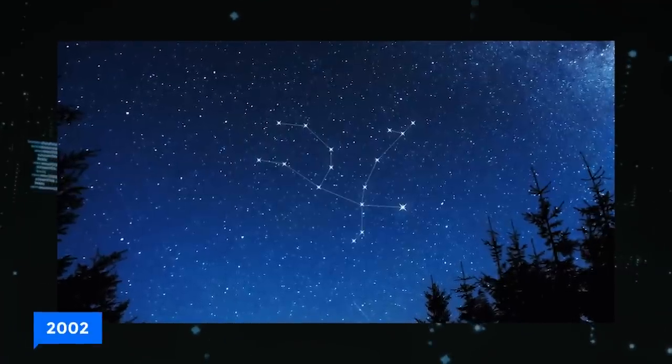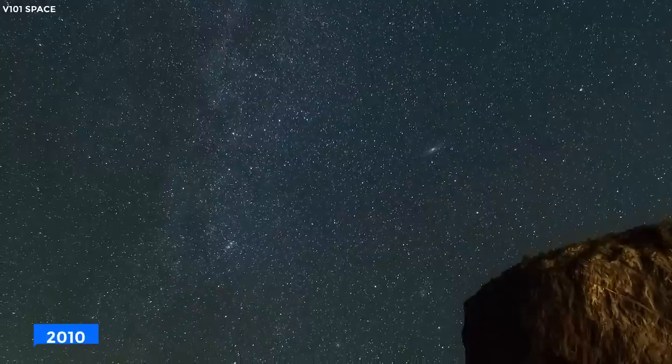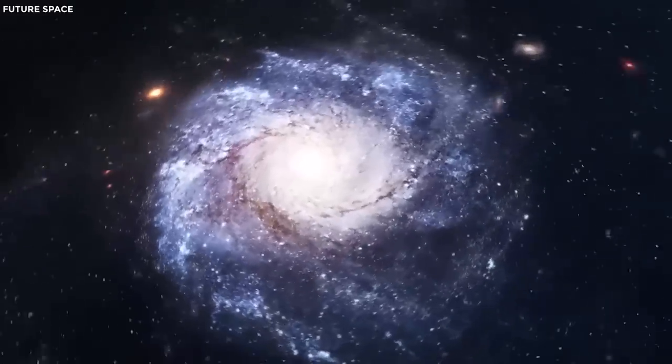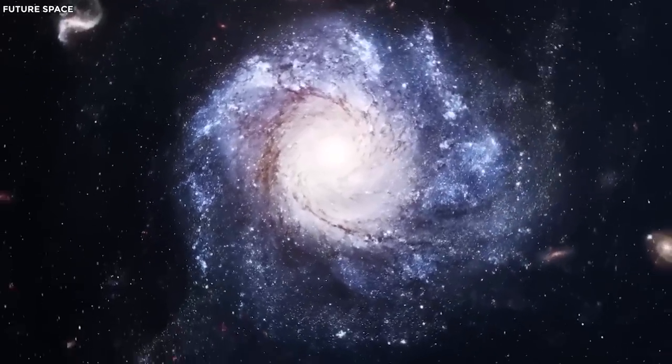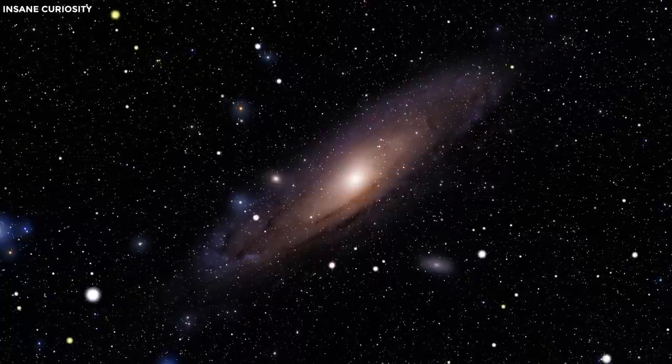In 2002, Andromeda's stars filled one part of the sky, but by 2010, they had shifted, like dancers in the sky taking new positions. These movements are like cosmic footprints, revealing how the galaxy journeyed through space, all told by measuring stars against faraway galaxies.